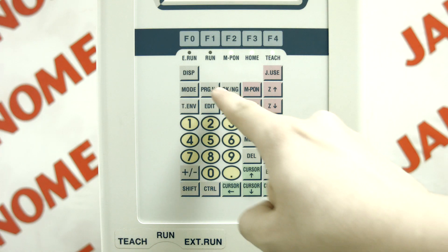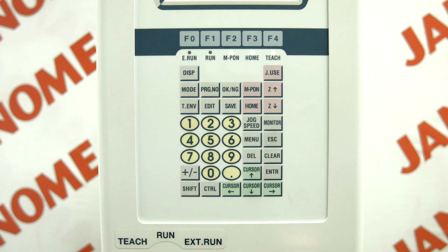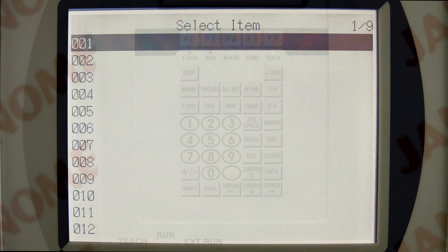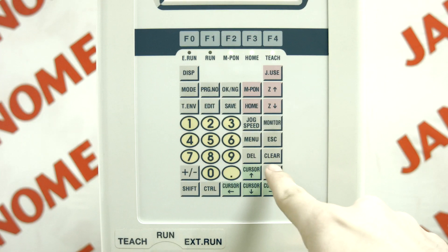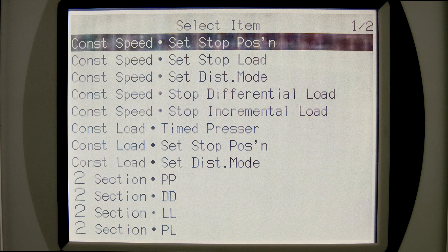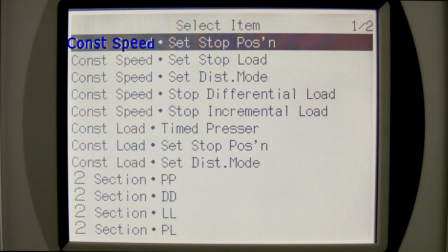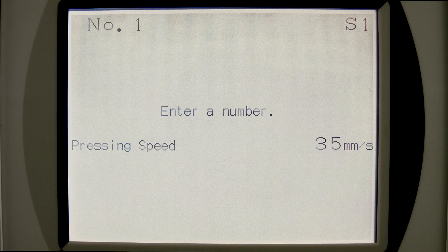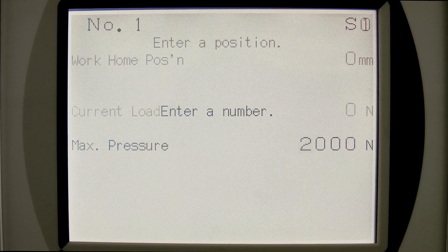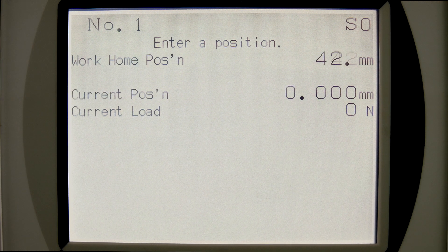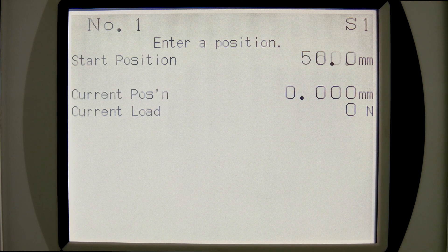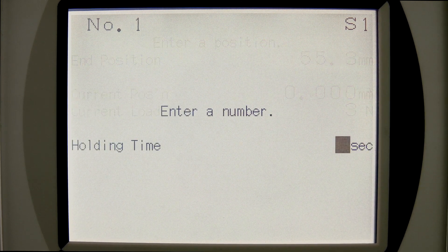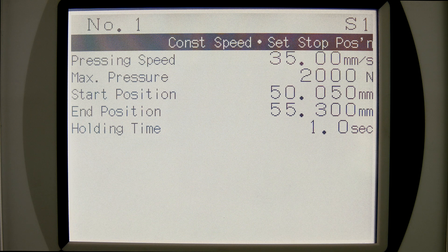In that case, press the program number key to display the program selection screen. To create a new program, press F2 New and enter an available program number. You will then be prompted to enter the main constraints of the program. In the case of constant speed set-stop position mode, enter pressing speed, max pressure, work home position, start position, end position, and holding time. When finished, the program base screen is displayed.